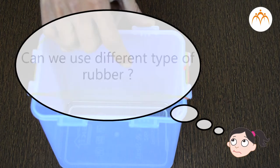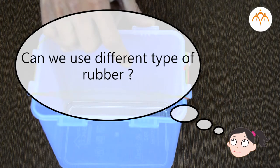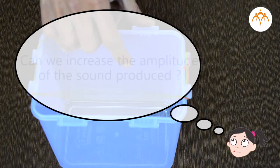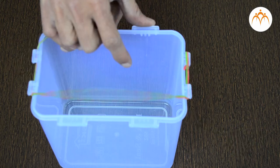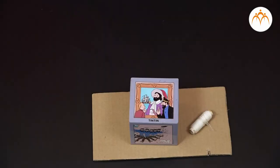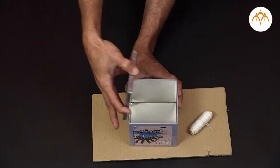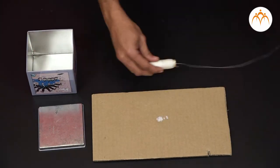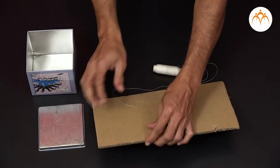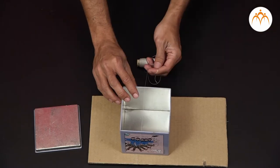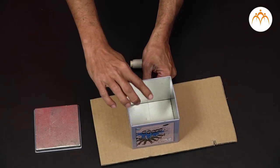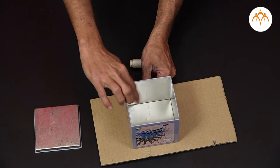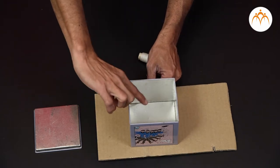Can we use a different type of rubber? Can we increase the amplitude of the sound produced? Discuss it with friends and find out yourself. The same exercise can also be done with a string and tin box — you can loosen and stretch the string to increase and decrease the tension and accordingly change the pitch.